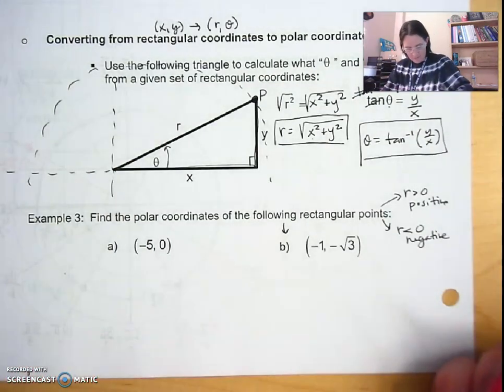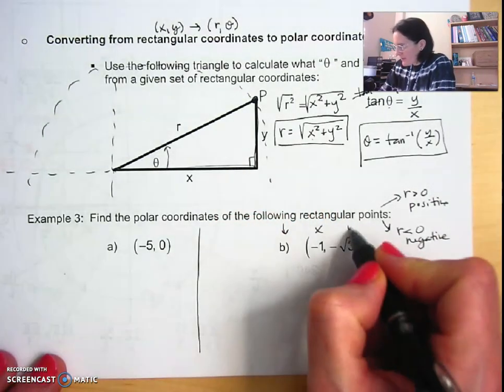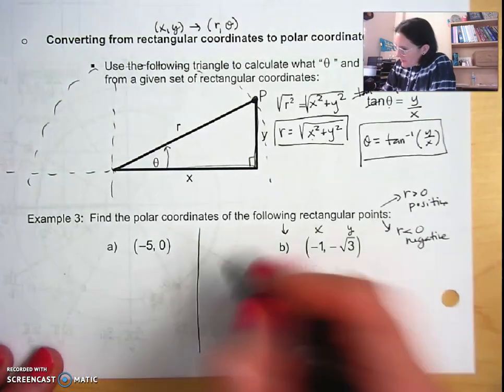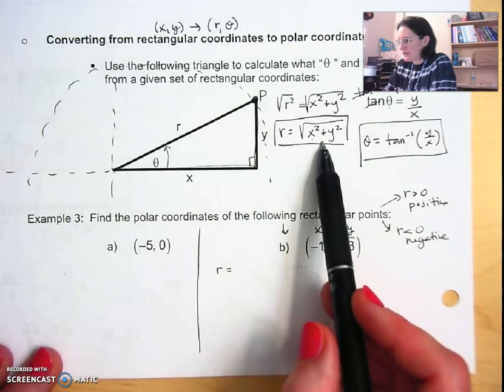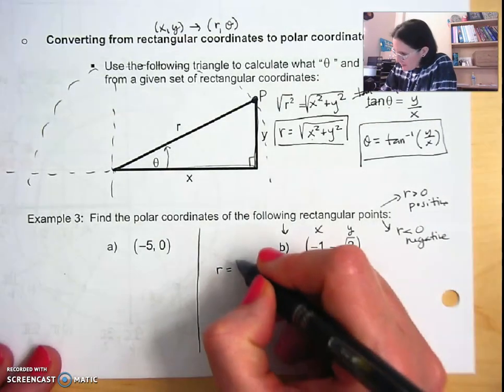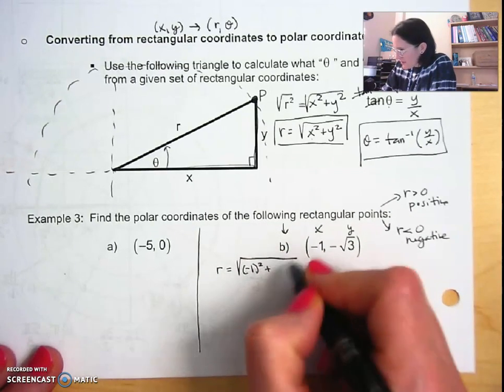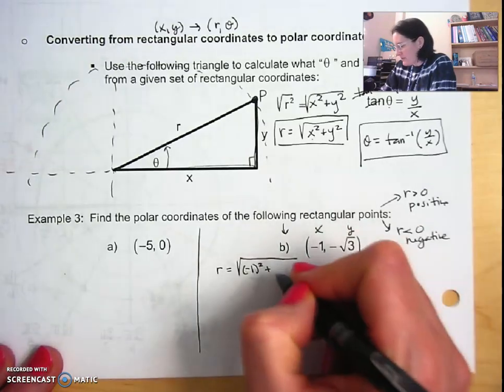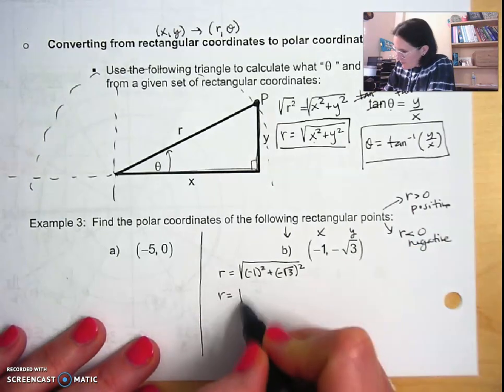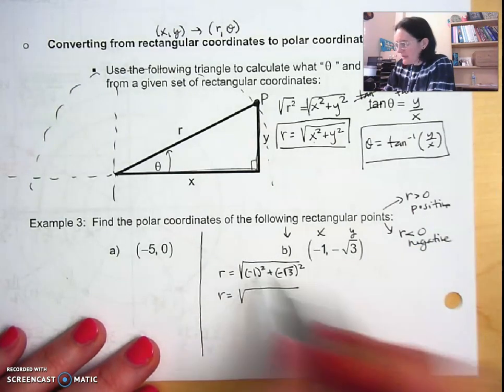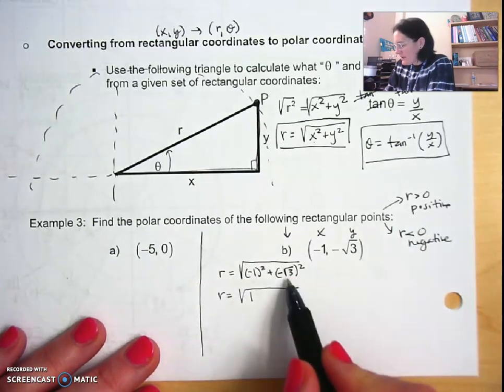So we have our x and our y. To start off finding our r value, remember we have this formula that we derived: the square root of x squared plus y squared. So I'm going to plug in my x, negative one squared, plus my y, negative radical three squared.